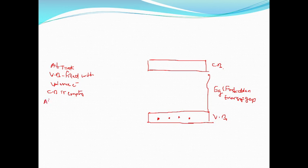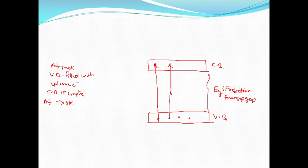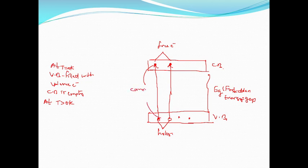When thermal energy is supplied — at T greater than 0 Kelvin — electrons in the valence band move from the valence band to the conduction band, leaving vacant sites in the valence band. These vacant sites we call it as holes, and the electrons in the conduction band we call it as free electrons or conduction electrons. This creation of electron-hole pairs we call it as carrier generation.